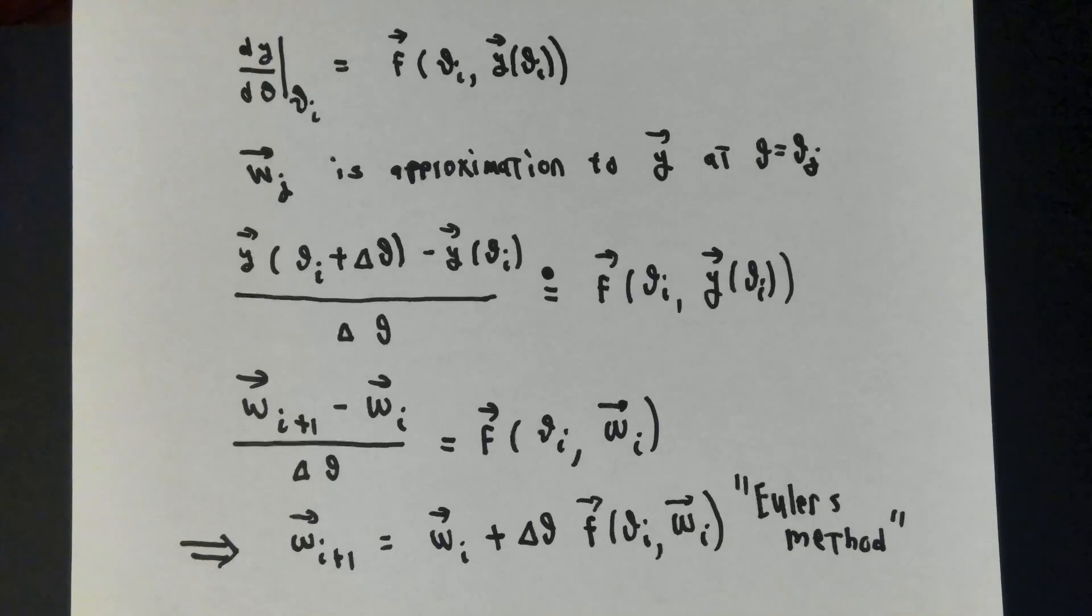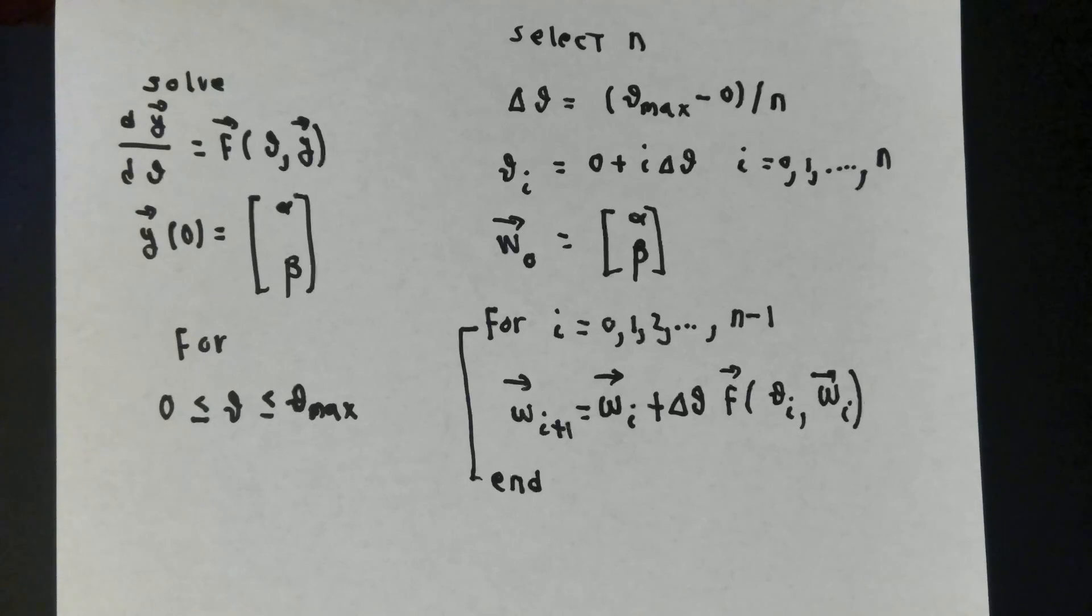This is approximately equal to the quantity on the right-hand side. To obtain my approximation method, instead of y at theta number i plus 1, I'll write w number i plus 1. Instead of y number i, w number i, and I'll say that this difference quotient of the approximations should equal f at theta i w i. Algebraic rearrangement says then that w i plus 1 is going to be w i plus the spacing in the theta values times f evaluated at theta i w i. This is called Euler's method. It's the simplest of all possible initial value solvers.